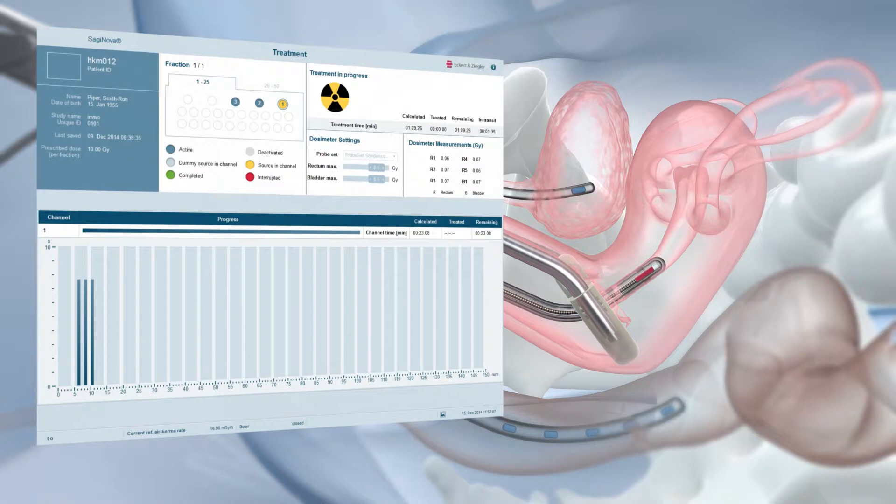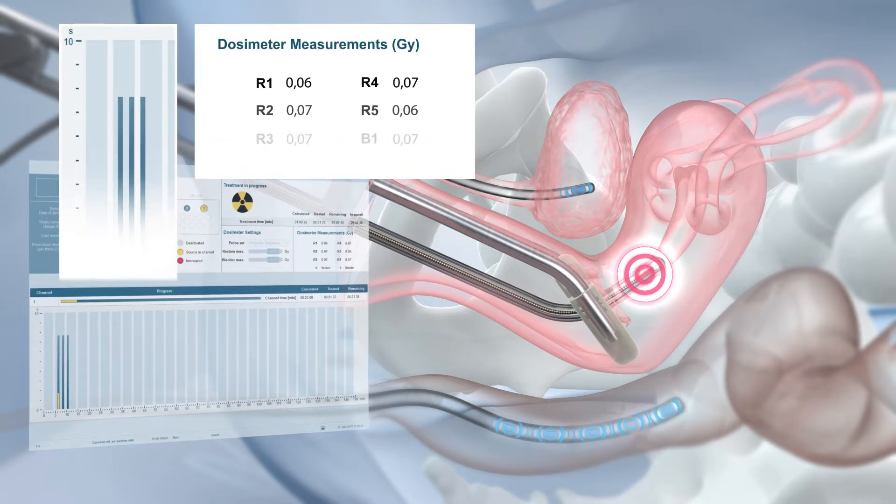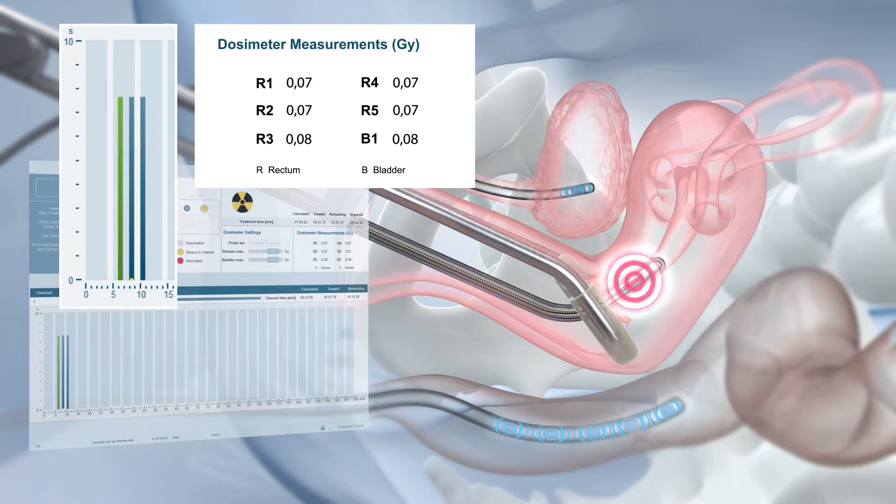The integrated in vivo dosimetry allows for real-time dose monitoring. Dose limit values can be defined via the Saginova treatment control software, and warnings are displayed if bladder or rectum dose limits are exceeded. The complete data is integrated in the treatment report for convenient documentation.